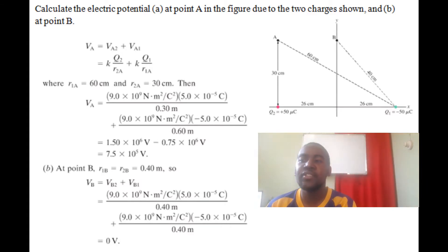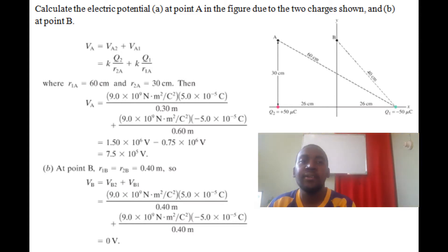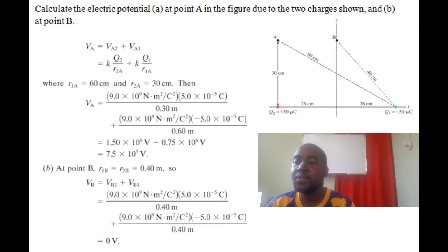We're asked to find the electric potential due to the two charges q1 and q2 at points A and B. The potential at A is the sum of the potential due to q1 and q2. We know that V equals kq over r. Note that the charge sign is actually used in electric potential — we keep the sign. In electric field strength we don't keep the sign. So q1 is negative 5 and q2 is positive 5 — we keep the signs.